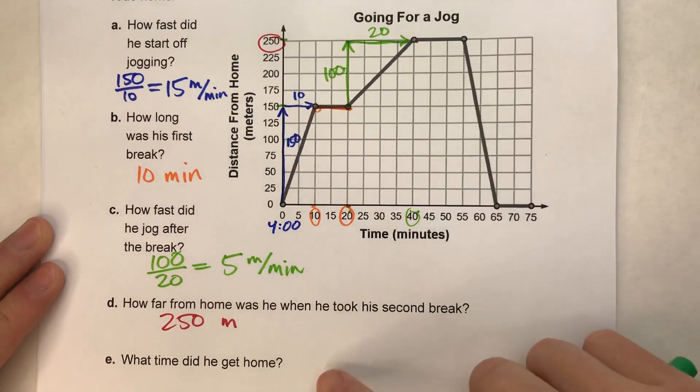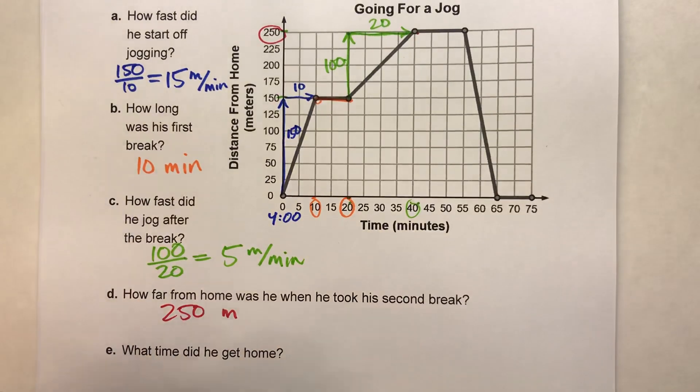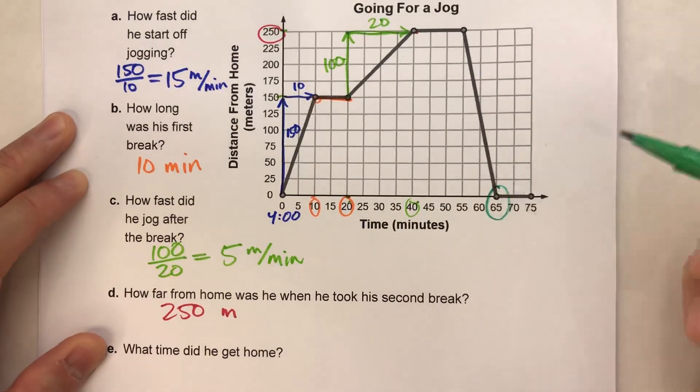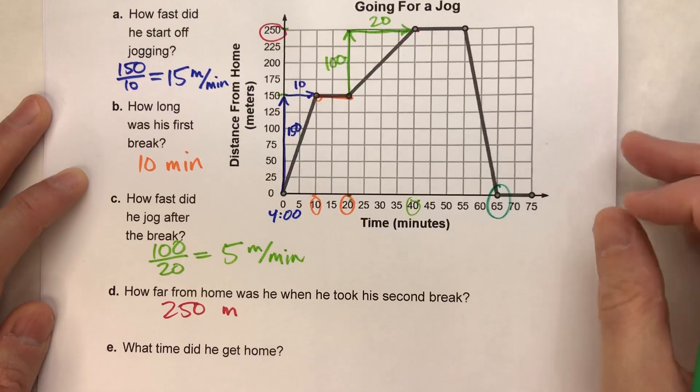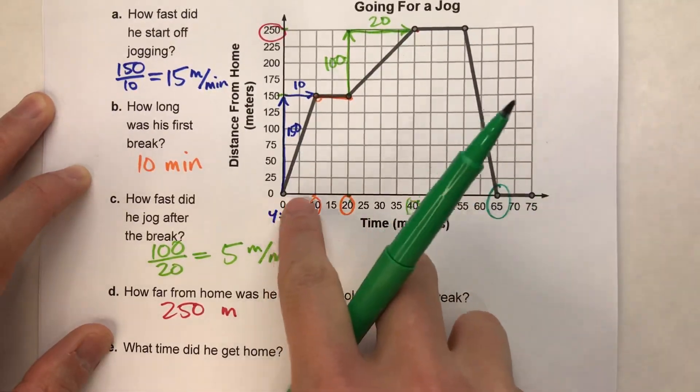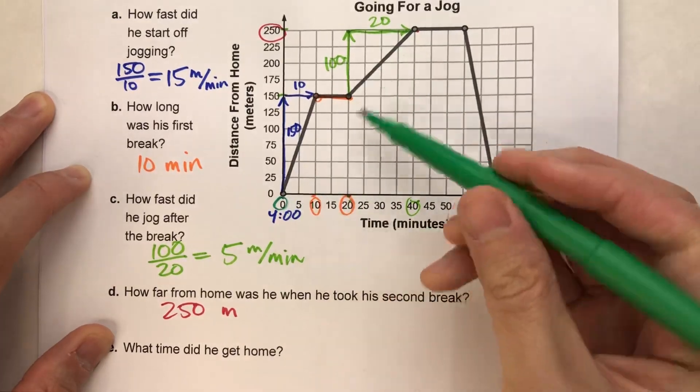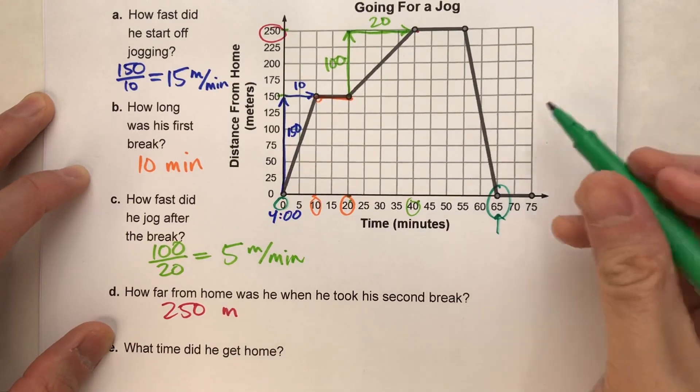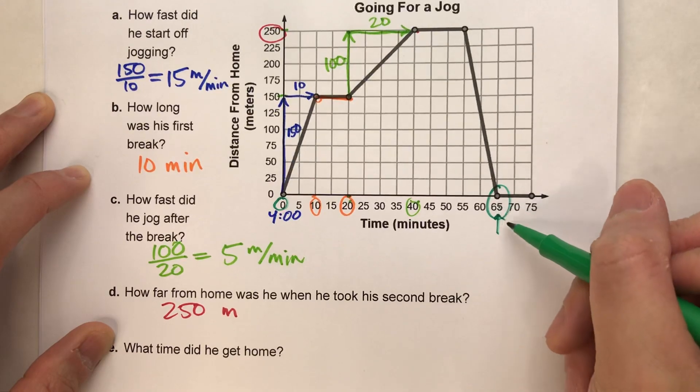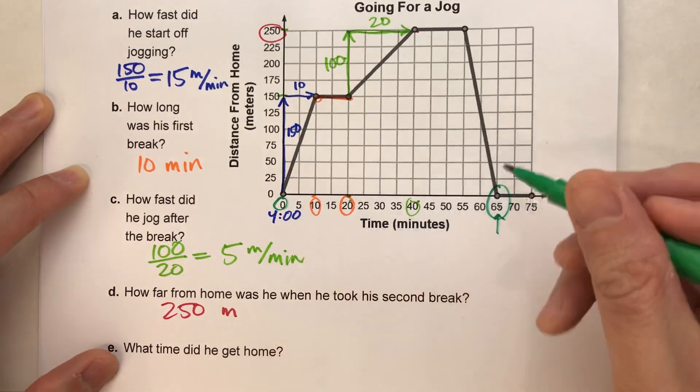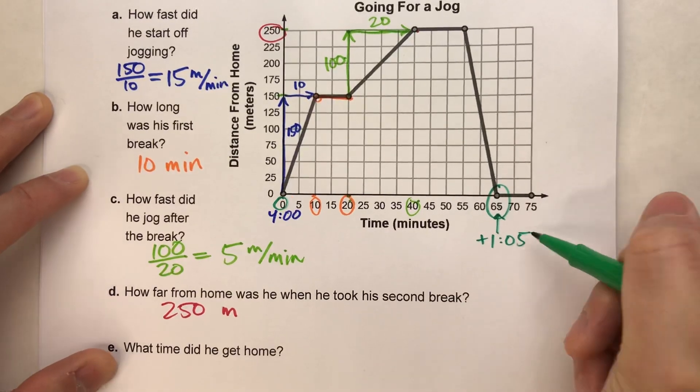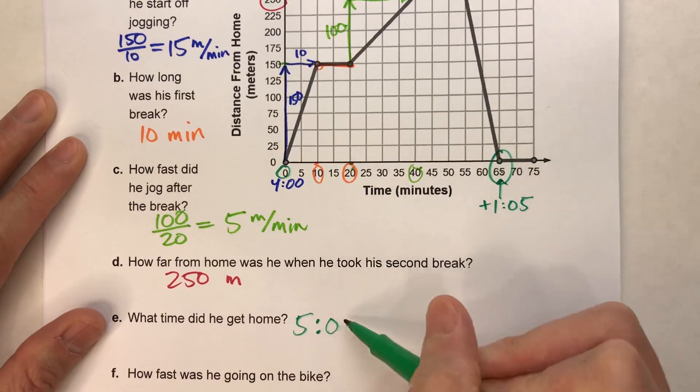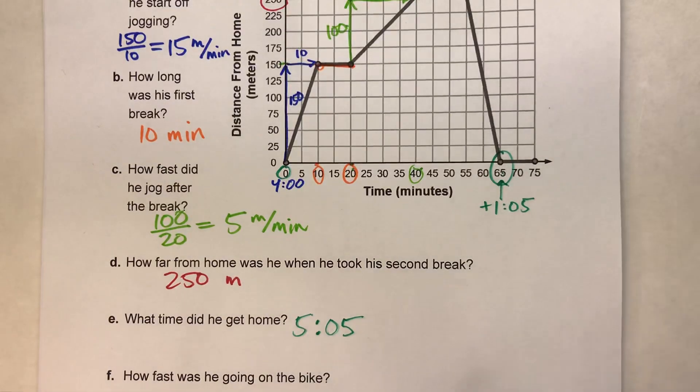Alright. Next question. What time did he get home? Now, this is tricky because we can tell he rode all the way back home and he got home right here at 65. But what time is 65? Now, remember, this is the time that has gone by. He started his whole journey at four o'clock. So 65 minutes later is when he got home. Now, I know 60 minutes is an hour. So this is an hour and five minutes later. So if he started at four o'clock and he added an additional one hour and five minutes, that means he got home at 5:05.